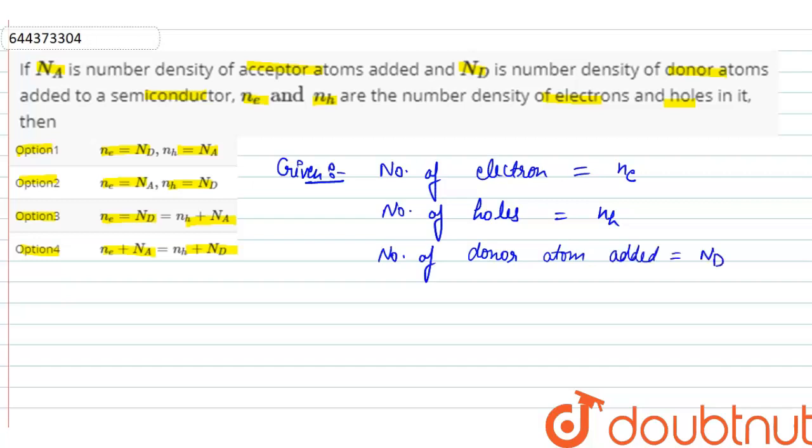Na is the number of acceptor atoms added.